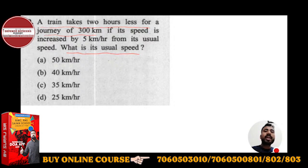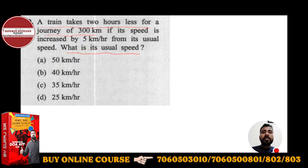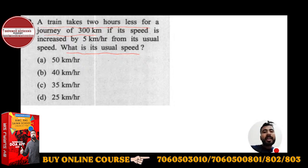One train takes 2 hours less than usual for a 300 km journey. If your speed is increased, your time decreases. The speed is increased by 5 km per hour. So the usual speed is less — that is the question. You need to find the usual train speed.